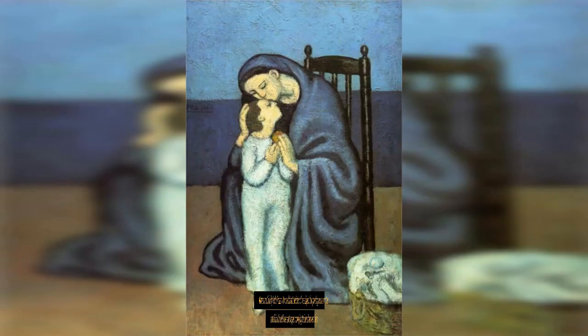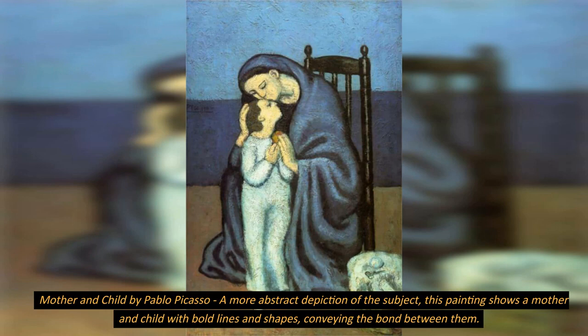Mother and Child by Pablo Picasso: A more abstract depiction of the subject, this painting shows a mother and child with bold lines and shapes, conveying the bond between them.